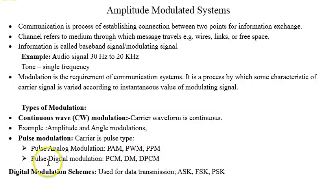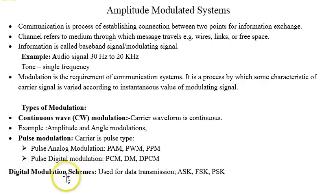The second type is pulse digital modulation — these are fully digital modulation techniques such as PCM, delta modulation, DPCM (differential pulse code modulation), and so on. These are the fully digital modulation schemes used for data transmission. The most common schemes for continuous wave modulation include amplitude, frequency, and phase modulation.